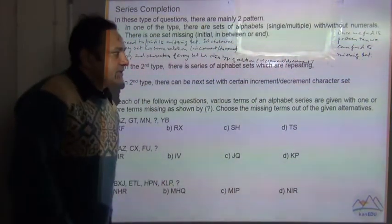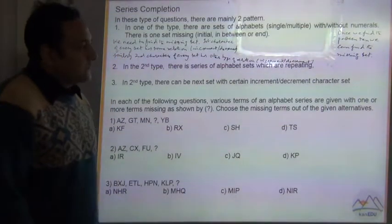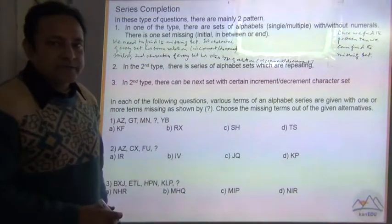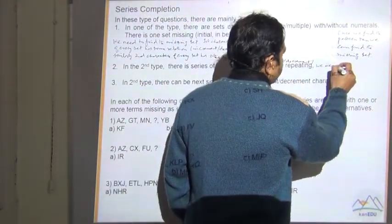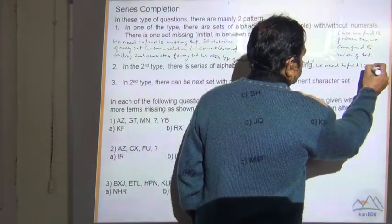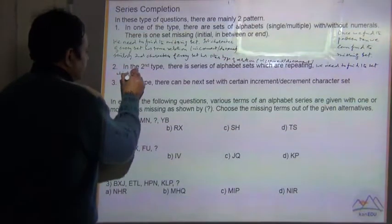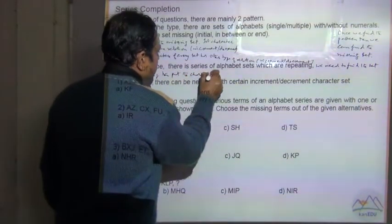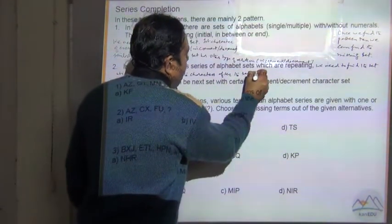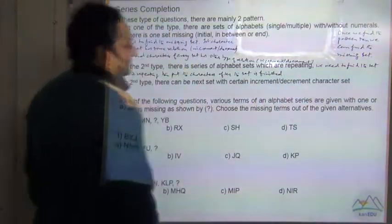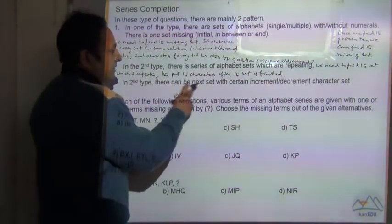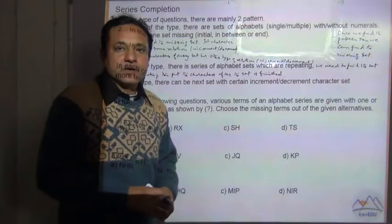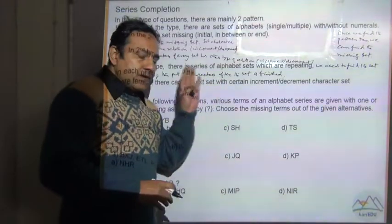In the second type, there is a series of alphabets which are repeating. We need to find the set which is repeating and then put those characters after the set is completed. In the second type, there can also be a next set with certain increment or decrement characters. These sets have an increment or decrement relation.